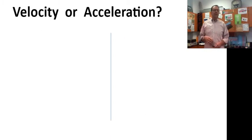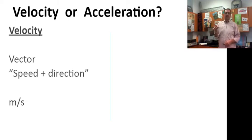Velocity or acceleration. These are commonly confused. You don't think they are confused because, you know, they're totally different. But I'll show you how I know in just a bit. Velocity is, of course, you know it's a vector. It's speed with direction. Units of meters per second.